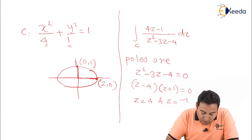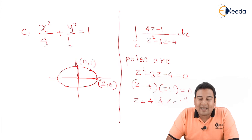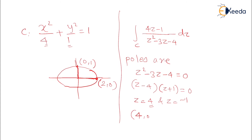Now let us check which pole is inside and which is outside. Since z = x + iy, z = 4 means 4 + 0i, corresponding to the point (4, 0). And z = −1 means −1 + 0i, corresponding to (−1, 0). Plotting these: (4, 0) is clearly outside the ellipse, while (−1, 0) lies inside the ellipse (since the ellipse extends from −2 to 2 on the x-axis).